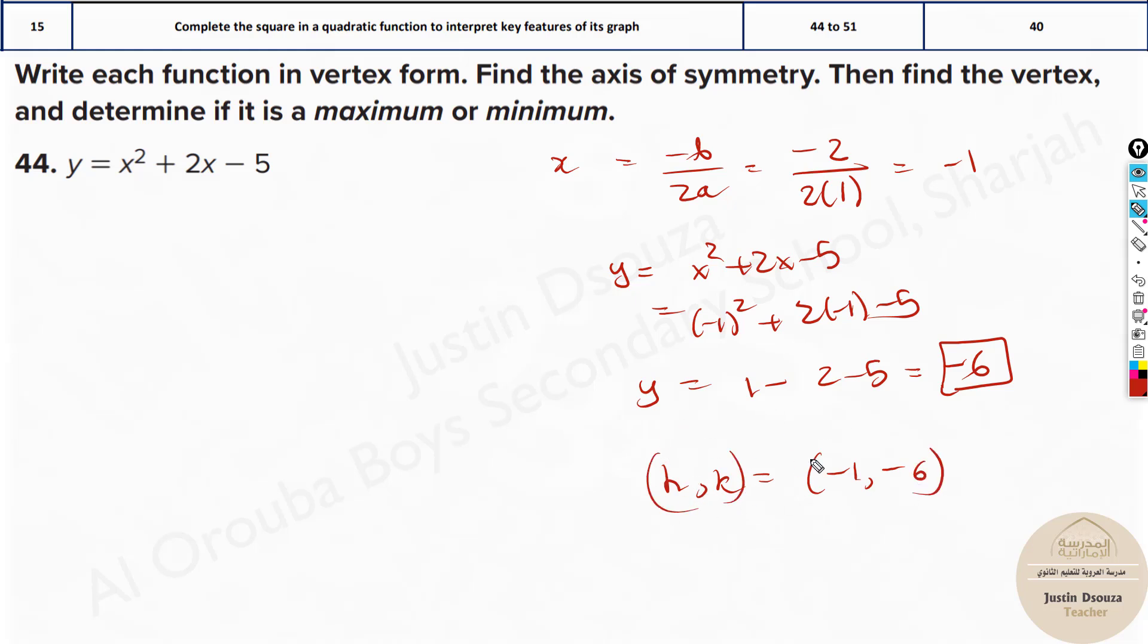So h and k equals minus 1 and minus 6. This is a very important thing. What is the standard form of a parabola? It's given as y equals a times (x minus h) squared plus k. So now in the standard form, you can easily see which is h and which is k and find the correct answer.